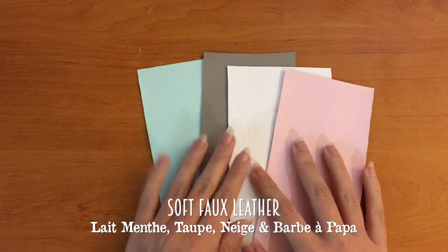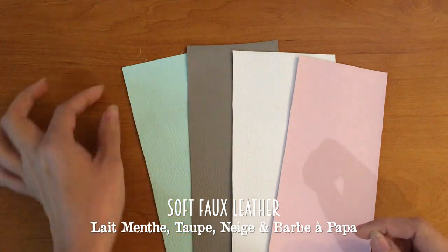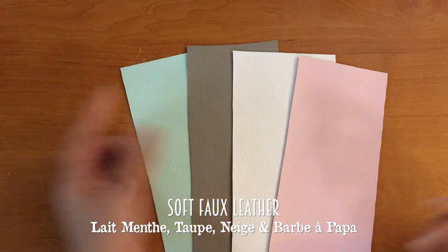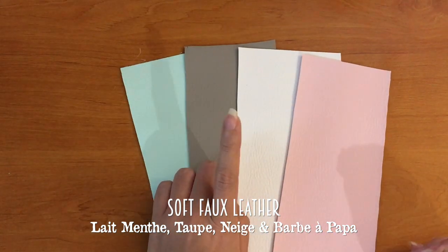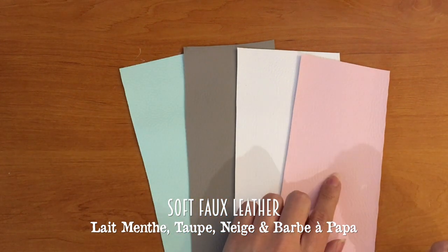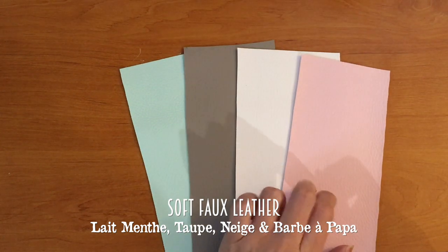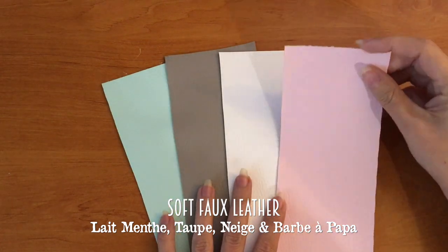So for the soft leather, you have four different colors that you can see here. So this one is the lemote which is a nice cold soft green. This is the taupe which is, I mean taupe, it's between grey and brown. And this is neige which is like snow in French so white. And this is the barba papa which is literally translated to daddy's beard but that's how we call candy floss in France. And it's baby pink I would say.